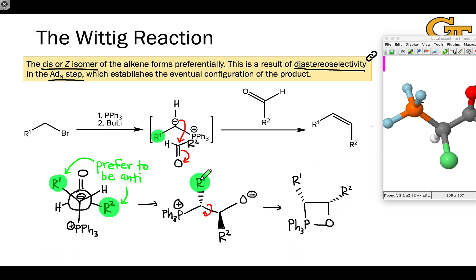Notice that the R1 and R2 groups have gone from looking anti, as they were just after the nucleophilic addition, to looking syn or cis in the intermediate after bond rotation and linkage of oxygen and phosphorus.